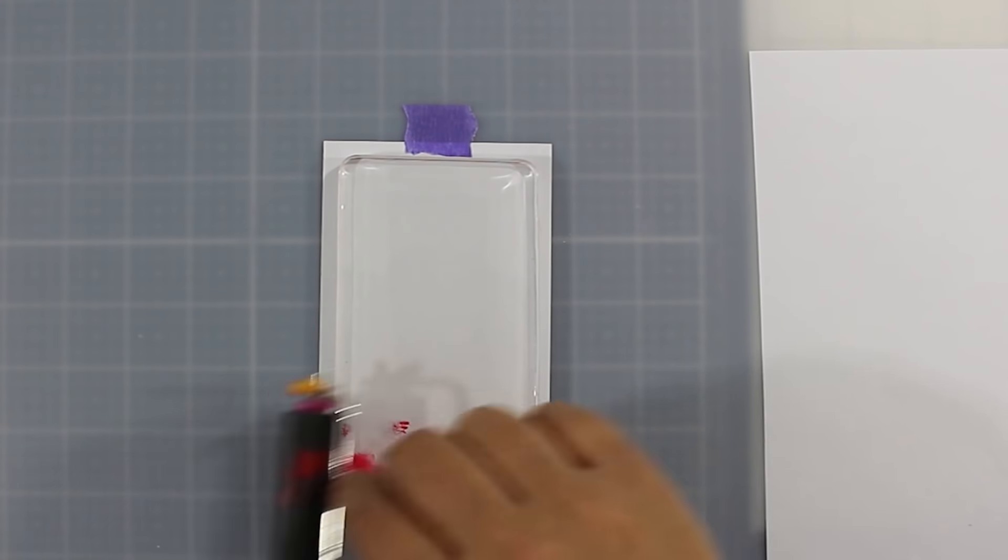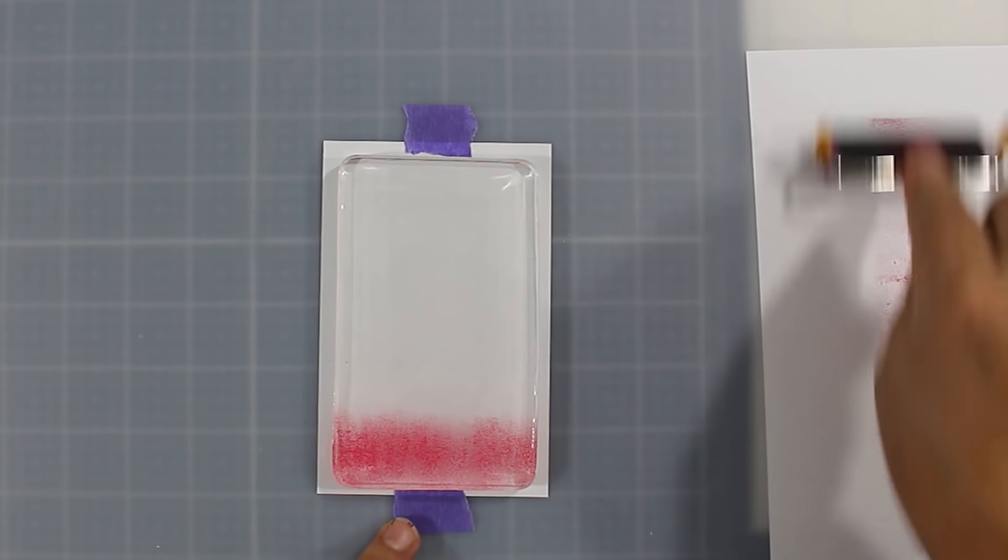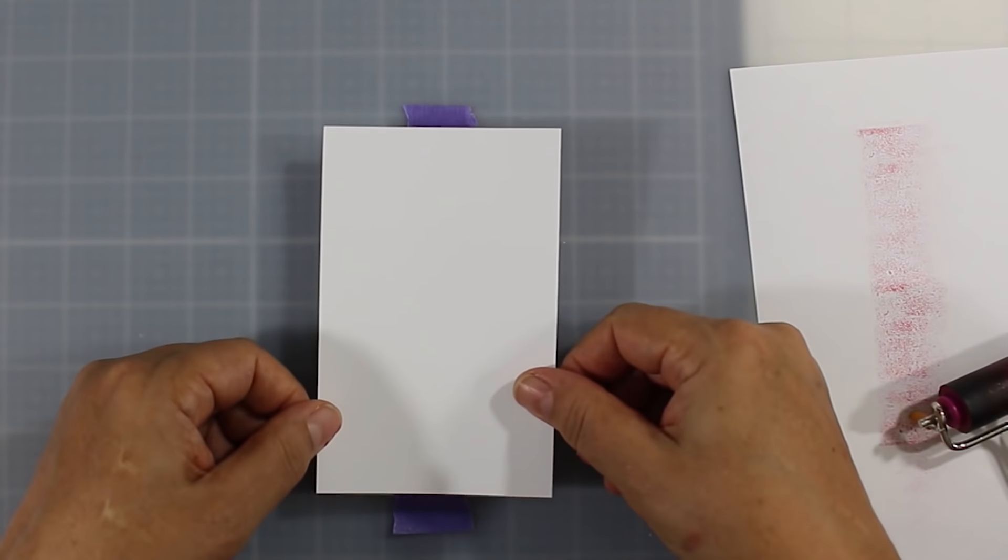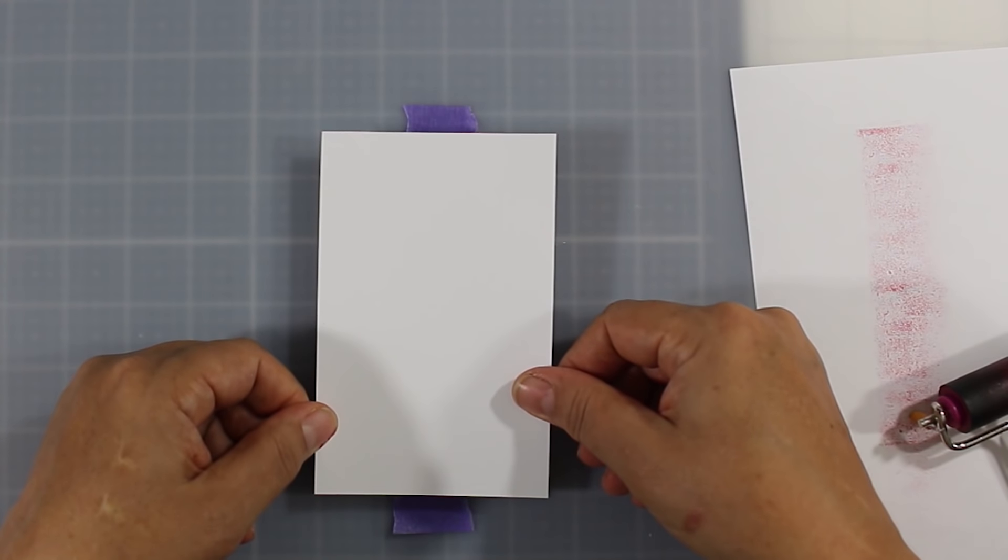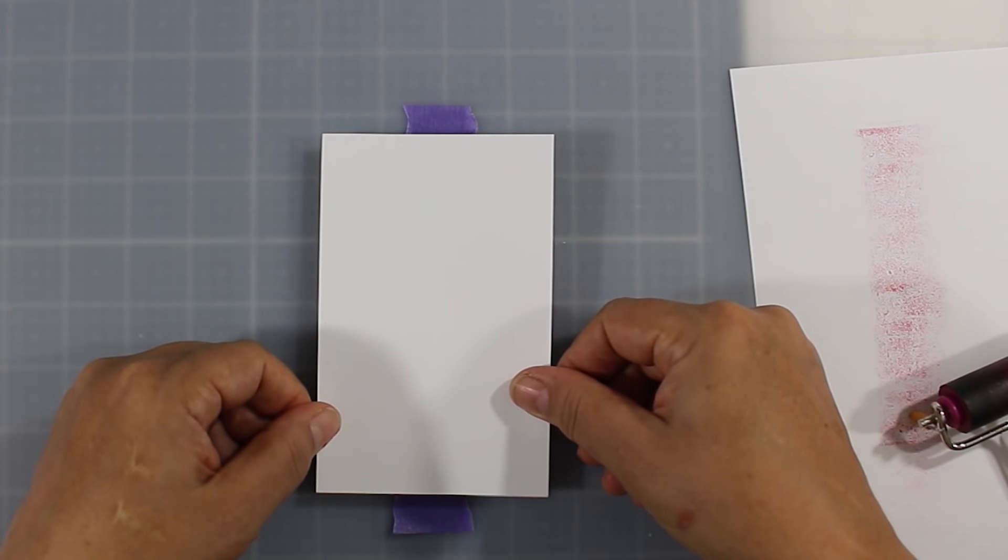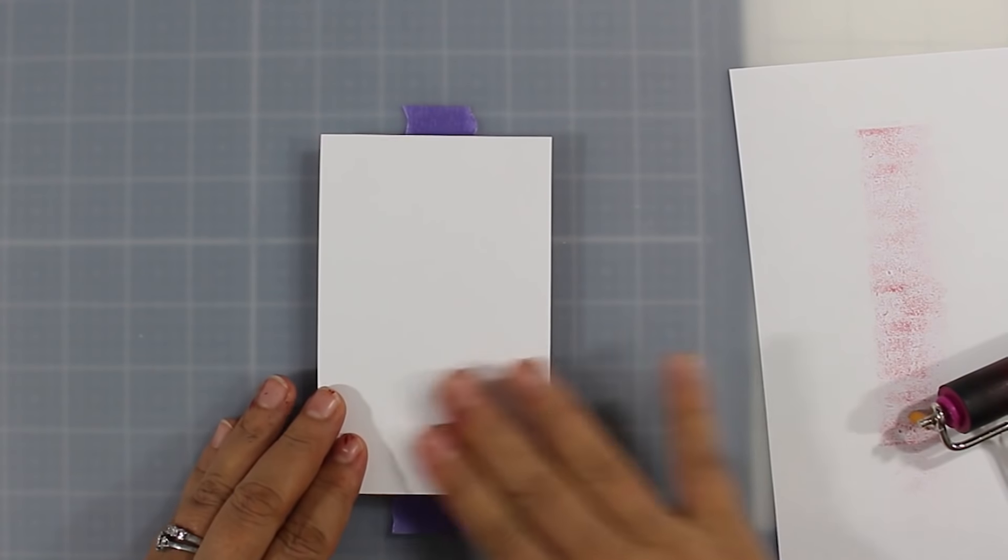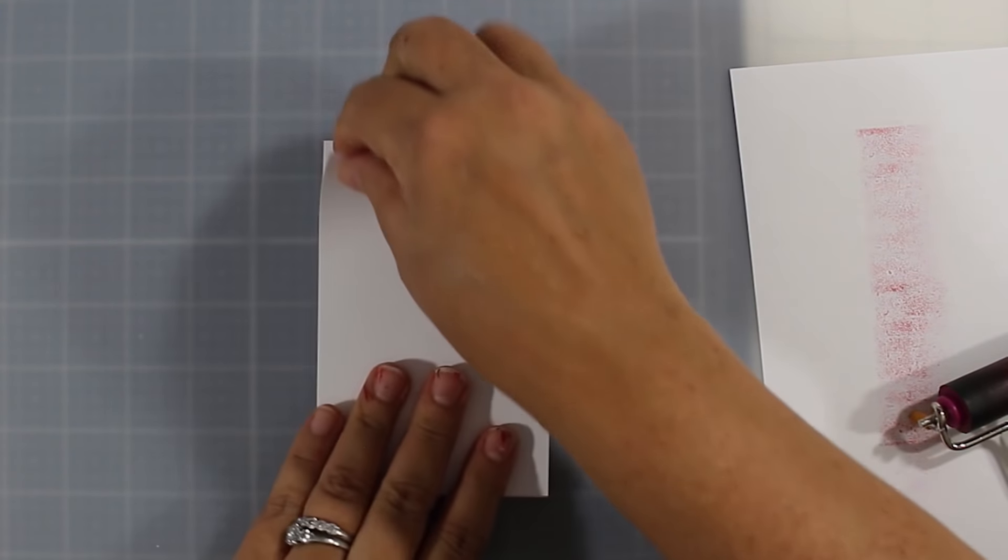You can see I'm brayering out some red acrylic paint. When I was thinking and talking about vibrant backgrounds, acrylic paint is so much better than ink when it comes to really punching you in the face with some amazing color. And so that's why I thought, you know what, let's try this instead of the traditional ink blending.